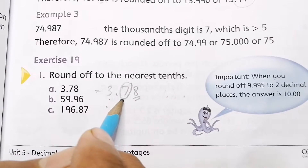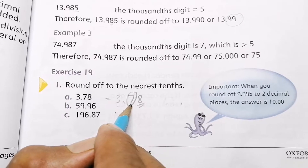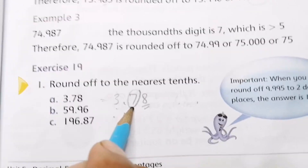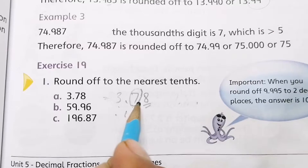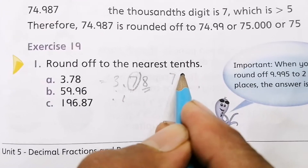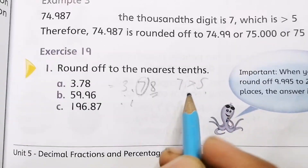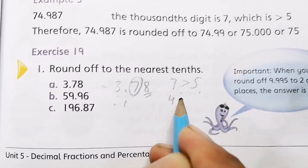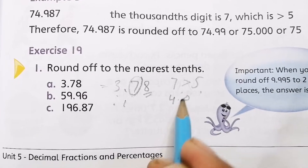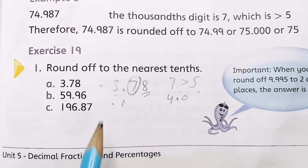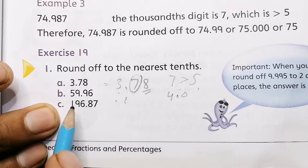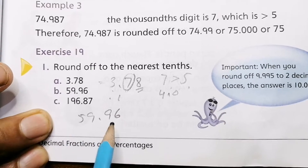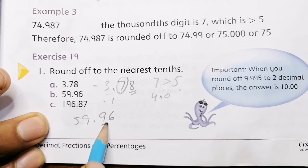For 3.78, the nearest tenth place digit is 7. To decide whether to round up, you look at the hundredth place: 8 is greater than 5, so 7 is rounded up to 8, and you write 3.8. Then 59.96 is given, where 9 is at the tenth place.